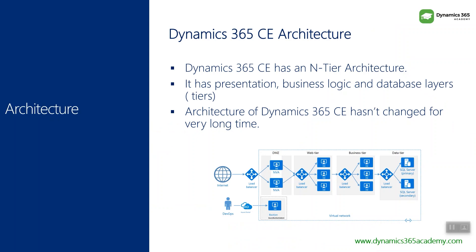Dynamics 365 customer engagement application has an n-tier architecture, which means it has multiple tiers or layers. We talked about the architecture of Dynamics 365 in course two of the series as well; we are going to repeat that here for those who are just starting this particular course. Basically, Dynamics 365 customer engagement still has the same architecture as Dynamics CRM — it hasn't changed for many years. I have been using Dynamics 365 since version 4.0, and at least since then the architecture hasn't changed at all. The features have changed, many functionality and configuration options have changed, but the underlying architecture has not.